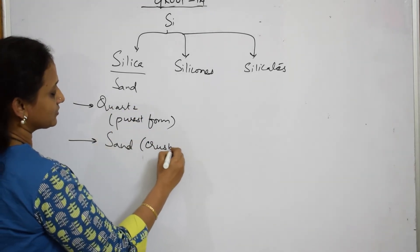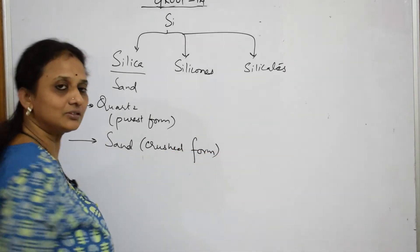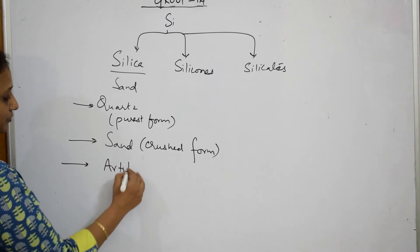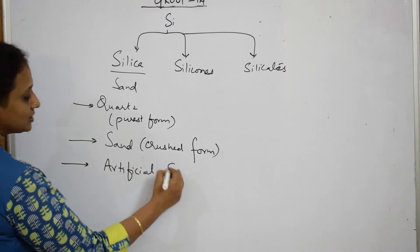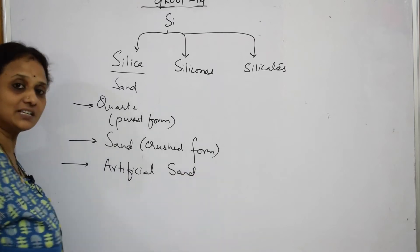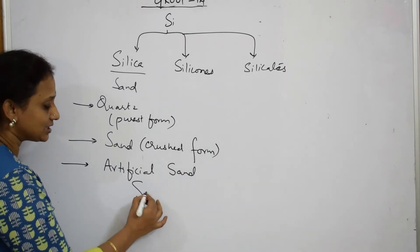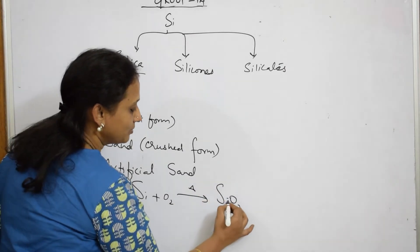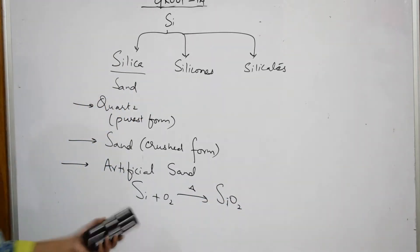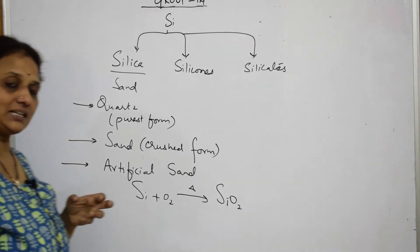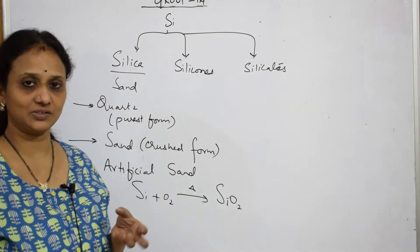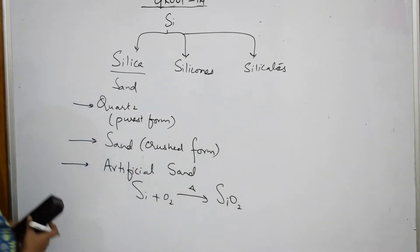What is sand? Sand is the crushed form of quartz. This is the purest form, and the crushed form of this is sand. When I take the third type of silica, that is called artificial silica or artificial sand. How do we prepare it? I just take silicon, add oxygen to this, and when heated in the presence of heat, it forms SiO2, that is silica. This is your artificial sand which we prepared. You're basically going to study the structures of this particular silica or silica crystals.